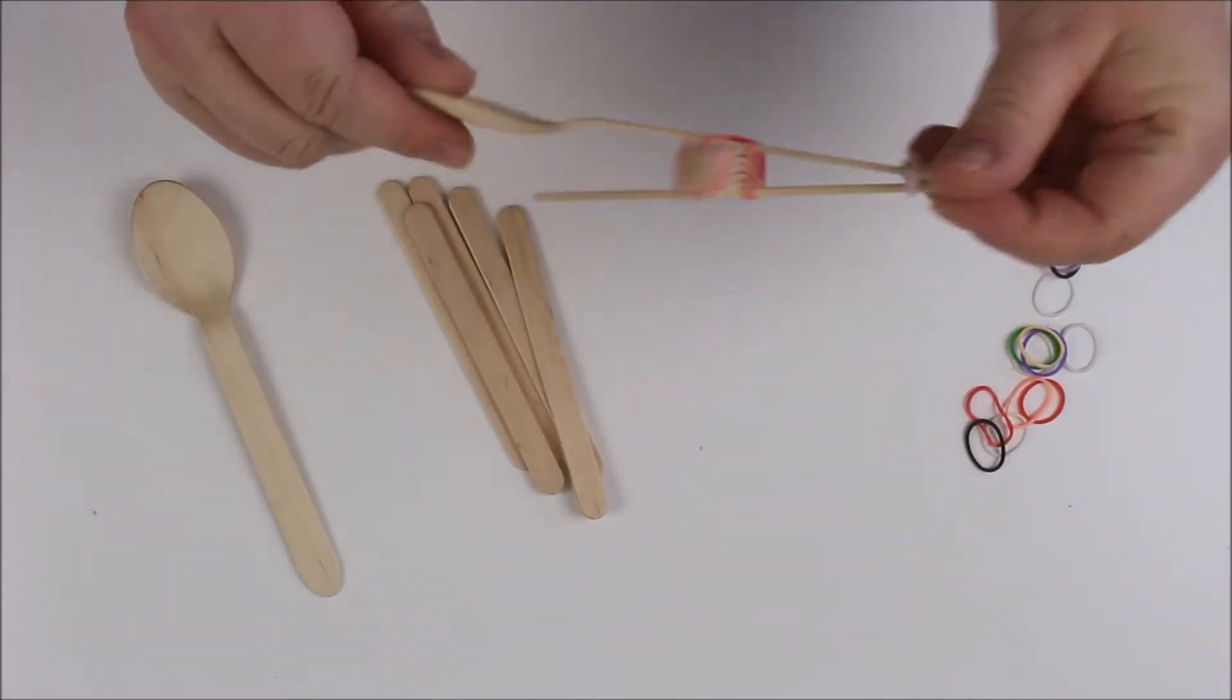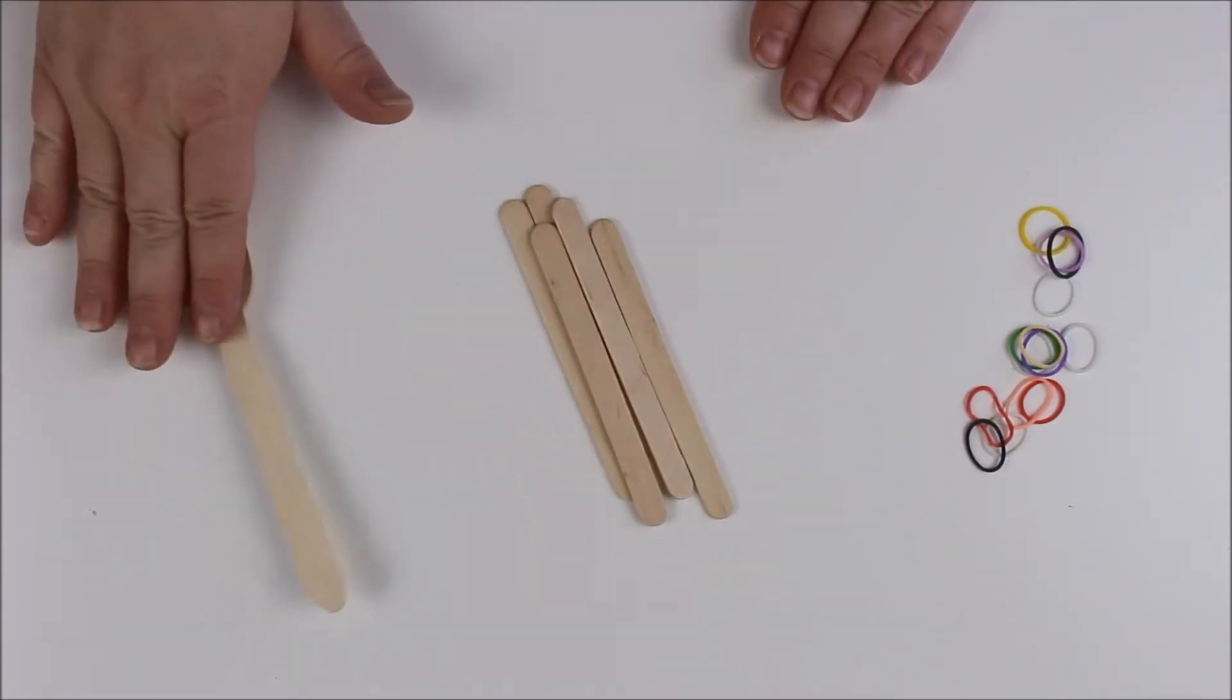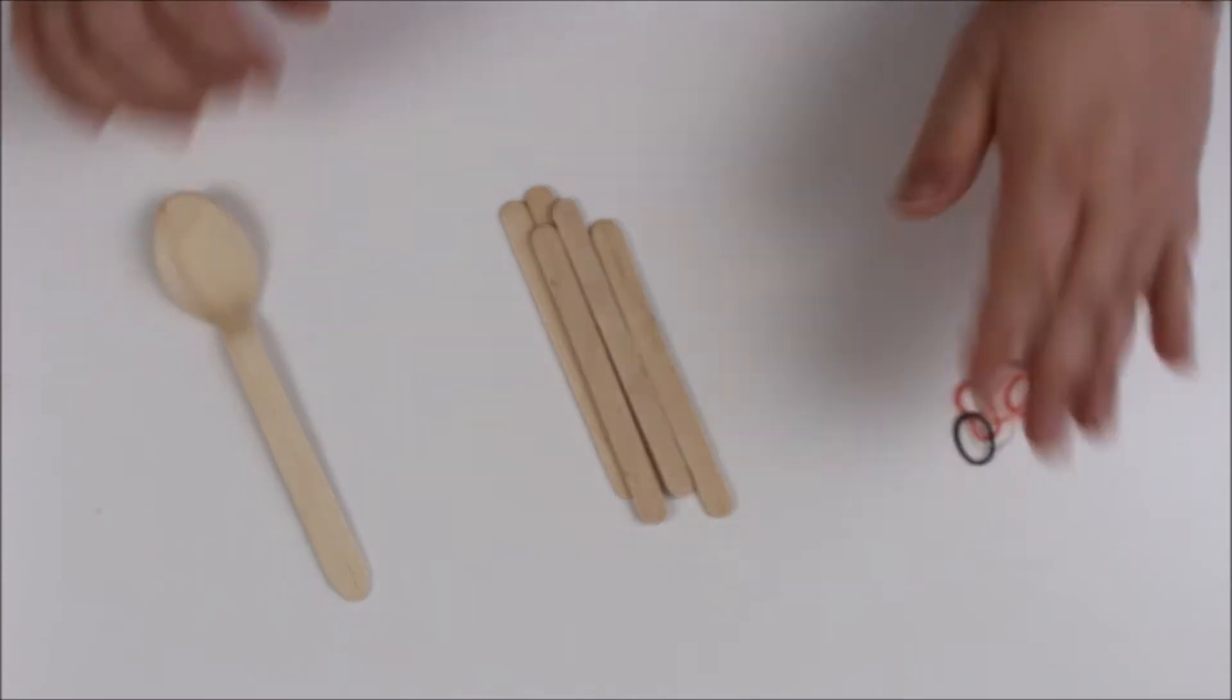It's really simple to make. You only need three materials. You need some lolly sticks, a wooden or a plastic spoon and some loom bands.